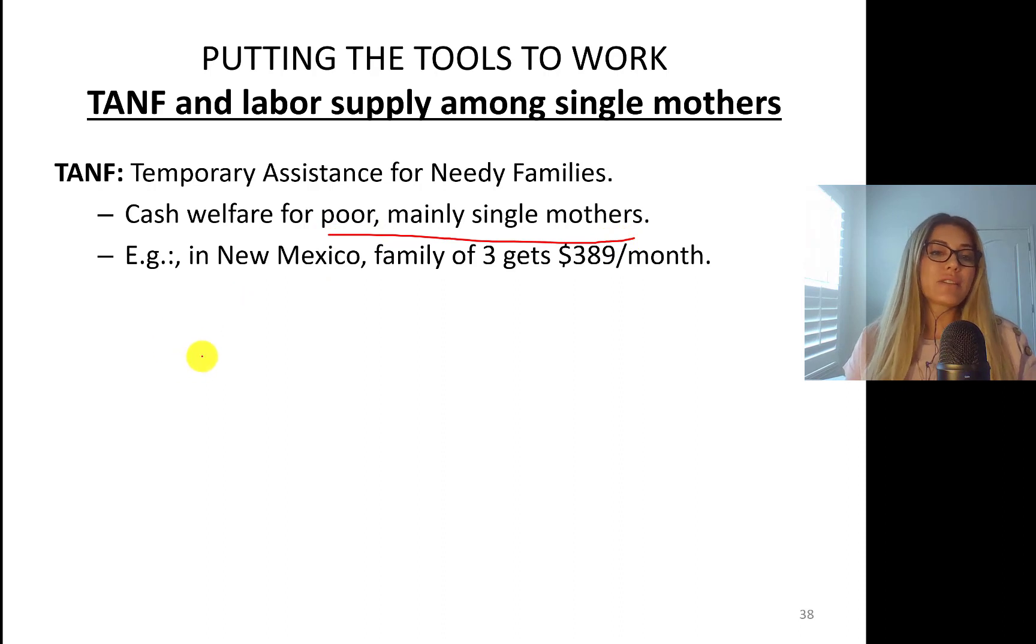Back in the days, for example, in New Mexico, a family of three, so this is mother and two children, they get $389 per month. That's not a lot of money. However, it's something, right? It could cover the food cost, so on and so forth.